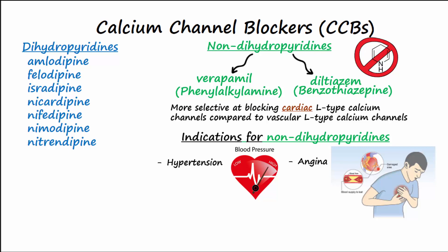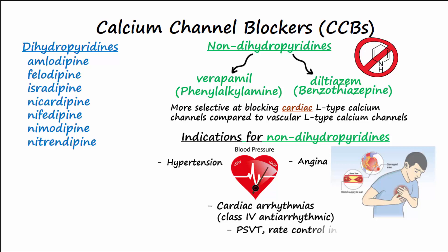Both verapamil and diltiazem are class IV anti-dysrhythmics, and in addition to hypertension and angina, are used to treat cardiac arrhythmias, including paroxysmal supraventricular tachycardia, abbreviated PSVT, and for rate control in atrial fibrillation.